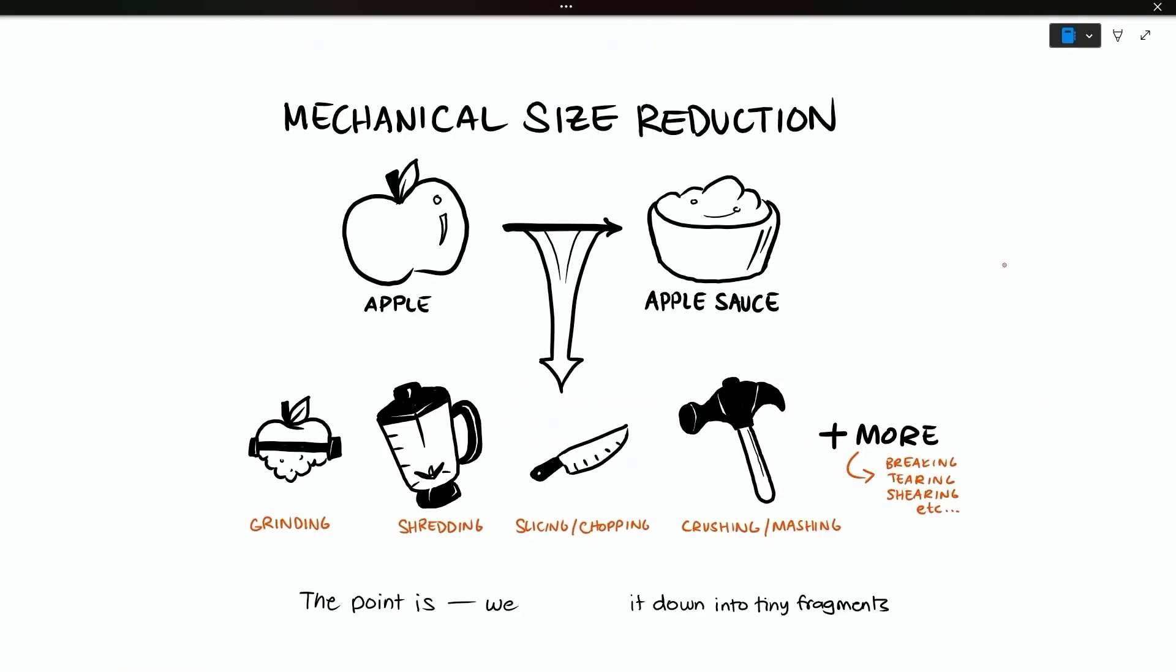There are several ways to make the pieces of waste smaller before it gets to the digester. Let's pretend you got four wisdom teeth removed. What can you do with an apple to turn it into something that you can eat easily? We make applesauce. You can grind it, shred it, blend it, chop it, crush it, mash it. The point is, we break a large apple down into tiny apple fragments.